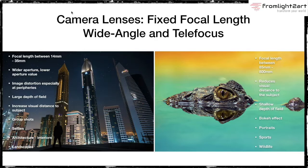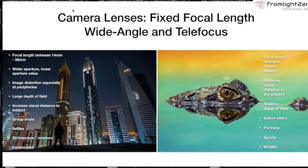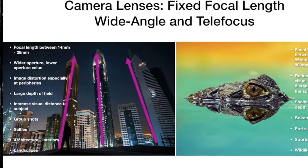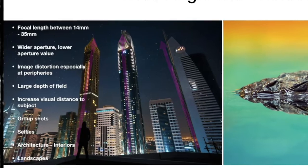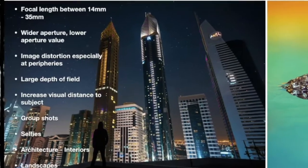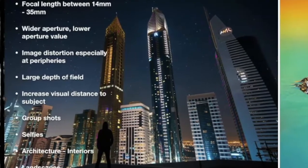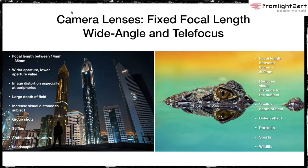Wide-angle lenses have image distortion — they can distort images. If you look at this picture here to the left, the buildings are converging to the middle; they're not in a straight line, and you'll often see this kind of distortion with wide-angle lenses. Wide-angle lenses will give you a greater depth of field generally, and they increase the visual distance to the subject.